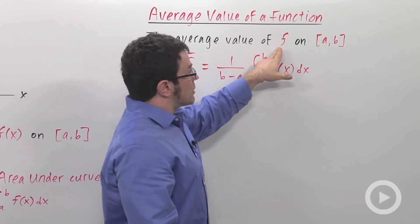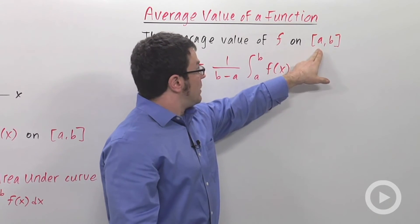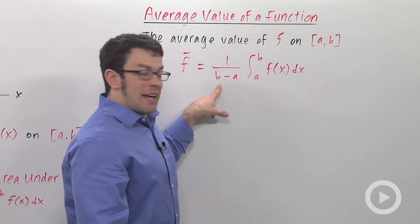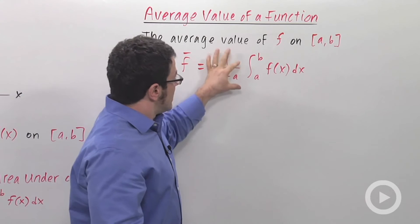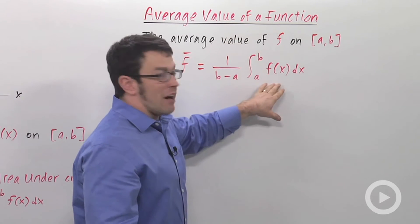The average value of a function f on the interval from a to b is 1 over b minus a, the width of the interval, times the integral from a to b of f of x.